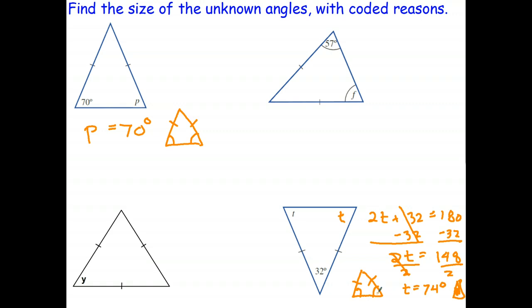Okay, first one up here is easy. We've got an isosceles triangle. Those are the base angles of the isosceles triangle. So we can say here that F equals 57 degrees. And the reason for that is we know that the base angles of an isosceles triangle are equal.